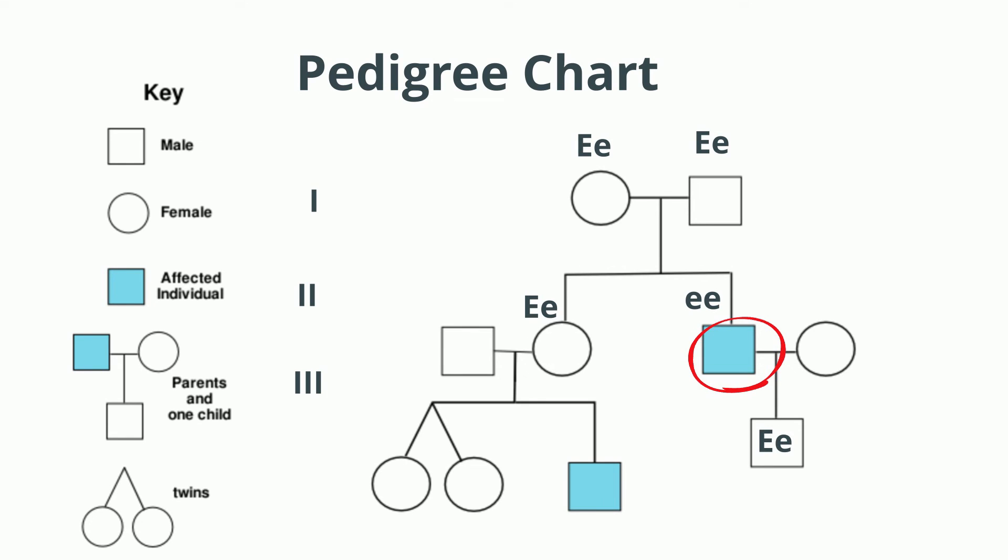And since the male we know is little e little e, the female would need to be big E little e.